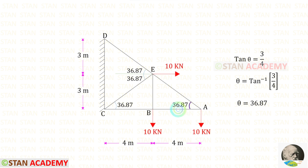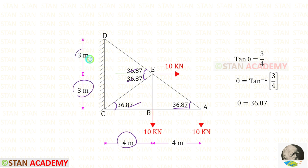If this angle is 36.87, this angle and this angle will also be 36.87 because of the similar dimensions.